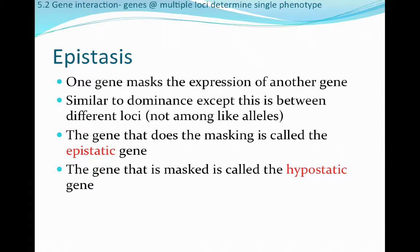In the second part of section 5.2 in the Pierce text, we're going to talk about epistasis. Epistasis is where one gene actually masks the expression of a second gene. This is similar to dominance, except that this occurs between two different loci, not two different alleles. The gene that does the masking is called the epistatic gene, and the gene that is masked is called the hypostatic gene.